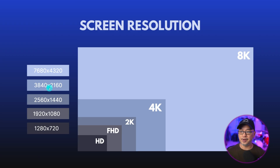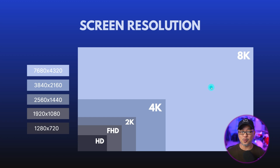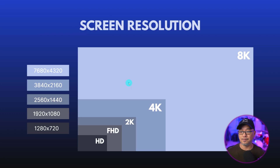4K is 3840 by 2160. And if you really want maximum quality at 8K, that's 7680 by 4320.